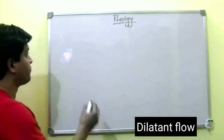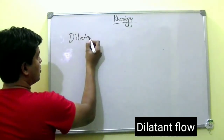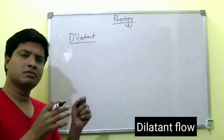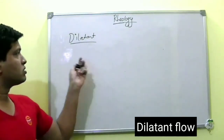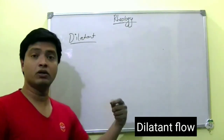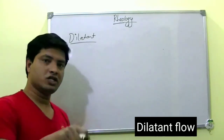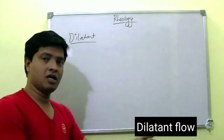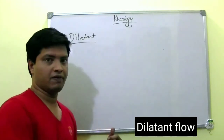We'll see about dilatant systems. There is another name for dilatant systems, which we'll see while discussing the mechanism. Dilatant systems come under non-Newtonian flow because they don't obey Newton's law of flow. Their viscosity changes as you change the shear stress. If you apply more shear stress, they become more thick — unlike pseudoplastic systems, which become more thin.